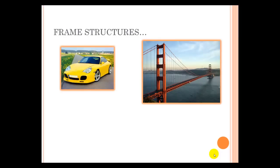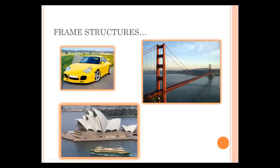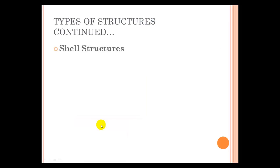Here are a couple of examples of frame structures. Underneath the metal shell of the car are things like struts and a frame that supports the metal. The Golden Gate Bridge is a frame structure. You can see the frame here, where it supports the bridge deck. Another frame structure is the opera hall in Sydney, Australia, and the frame supports the roof.